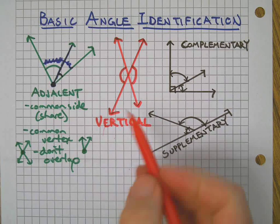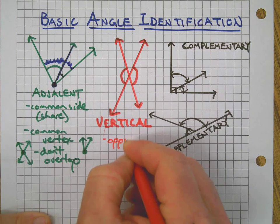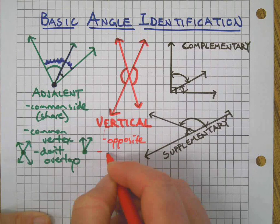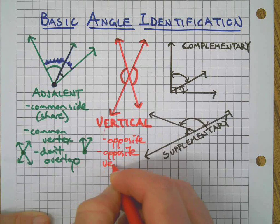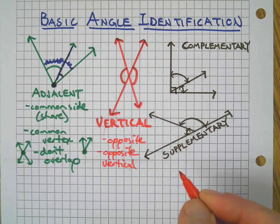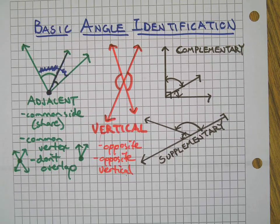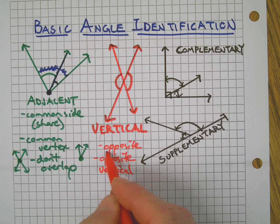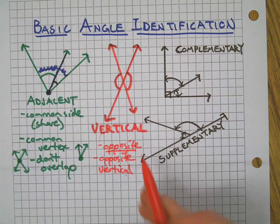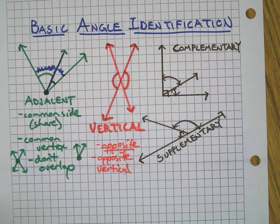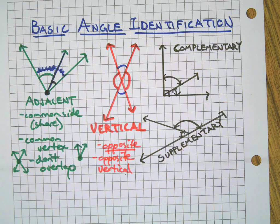Moving on to vertical angles, shown here in red. You may also see them referred to as opposite angles, opposite vertical angles, or vertical opposite angles — watch out for that vocabulary depending on your teacher. At the most basic level, vertical angles happen when two lines cross, and they are across from each other. Anytime you have two crossing lines, you'll have two pairs of vertical angles.